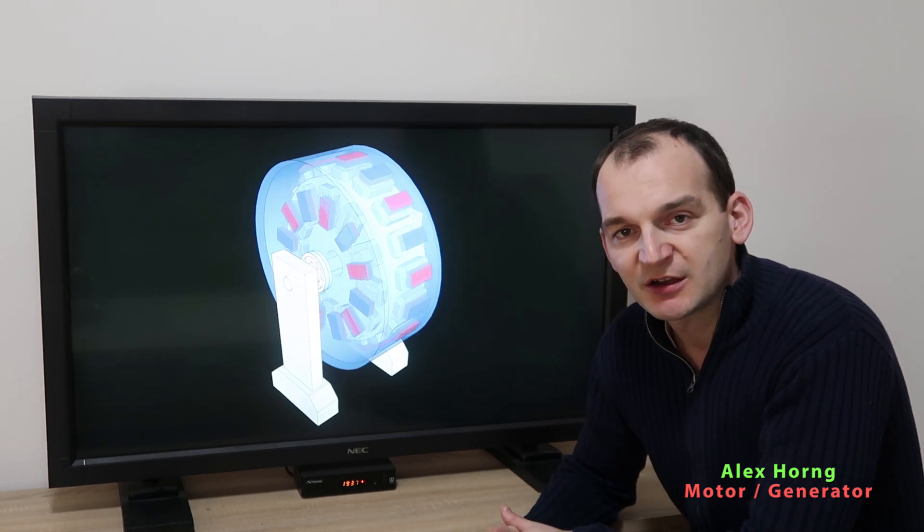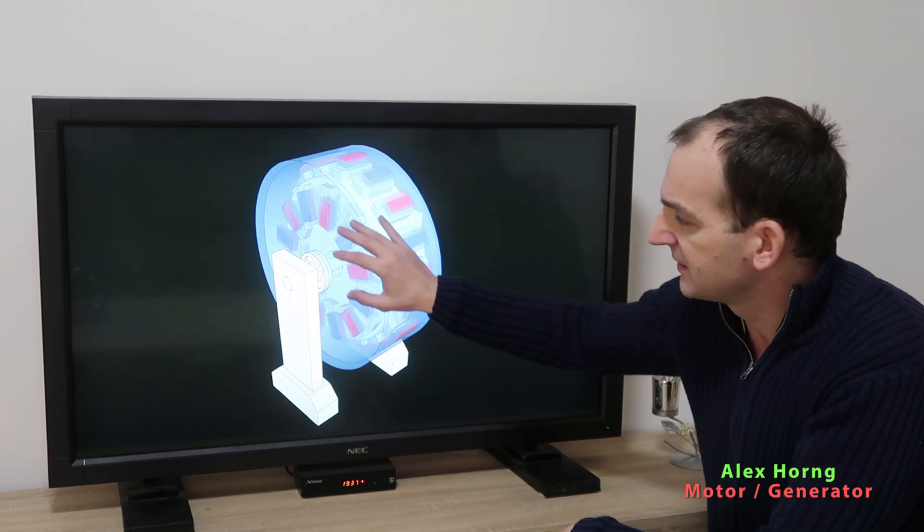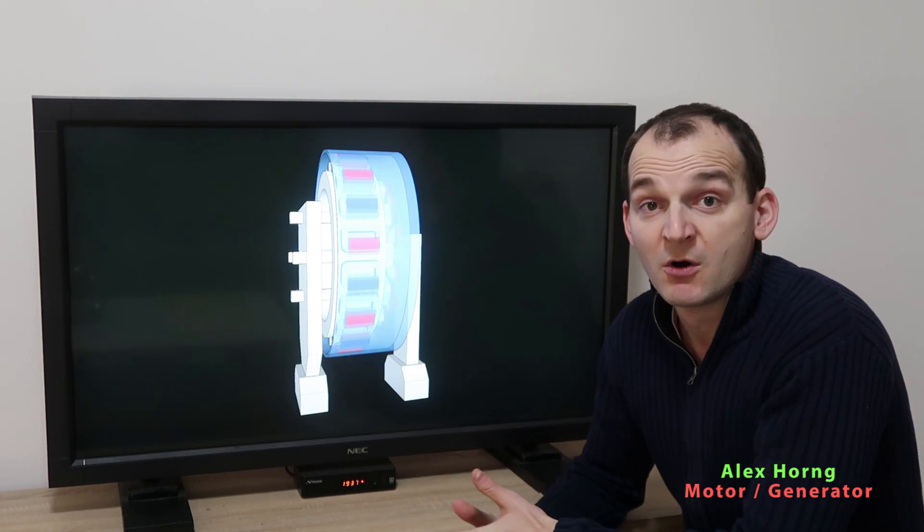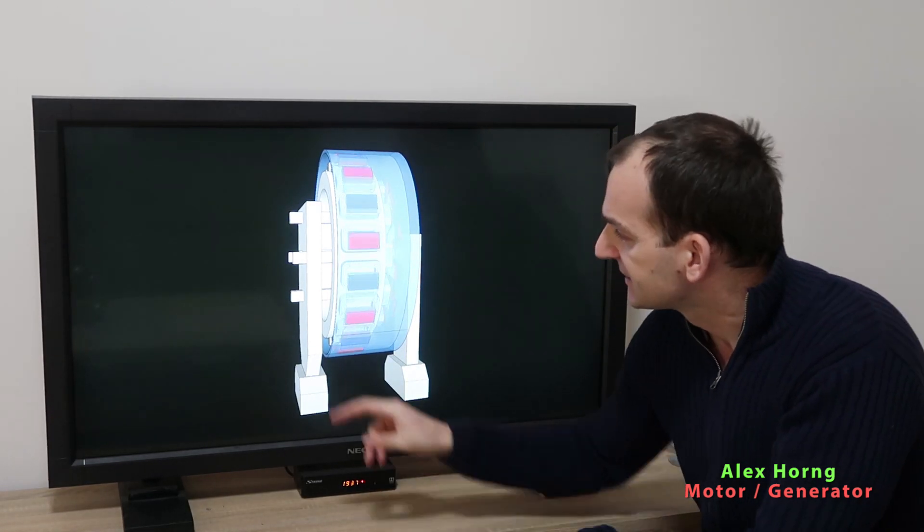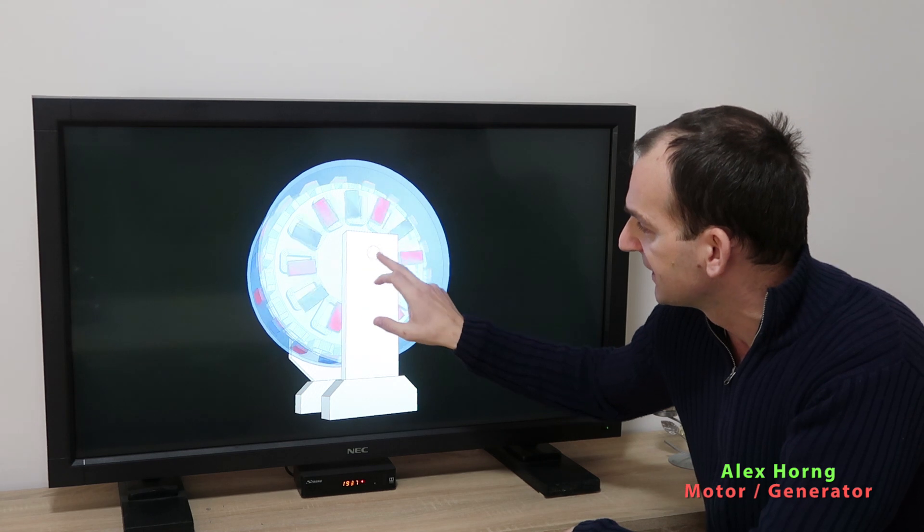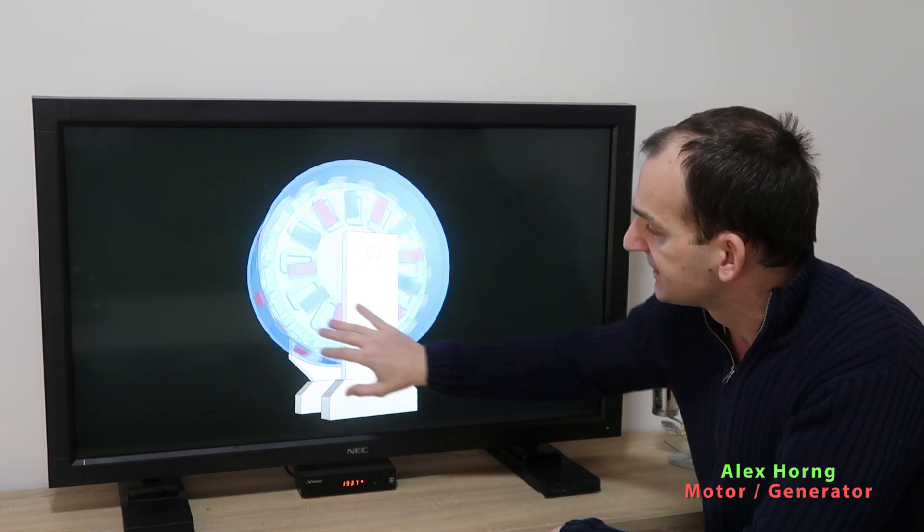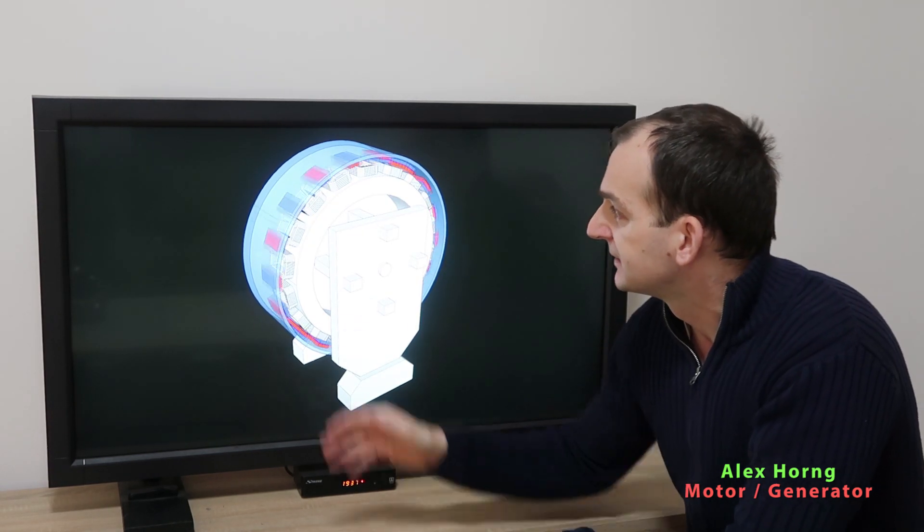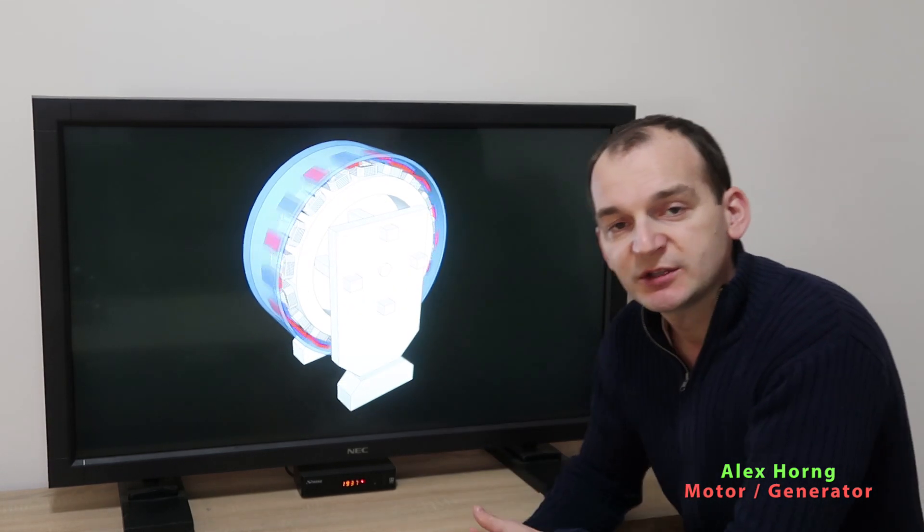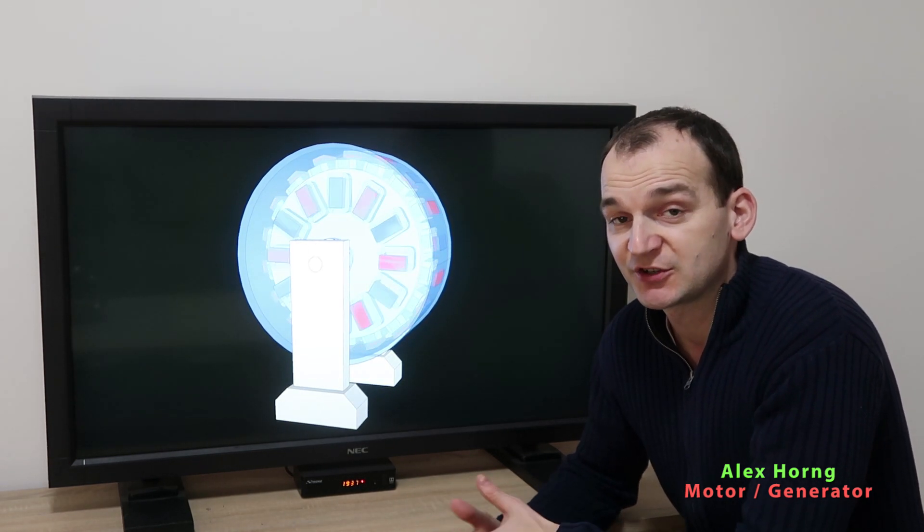Imagine this is a very big motor with almost perfect bearings on this main shaft where it's spinning. Because we would speed up this motor to turn, this huge wheel would have some inertia. Inertia is the potential energy or kinetic energy available on this rotor.